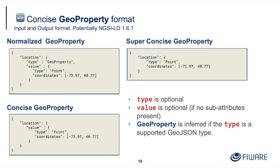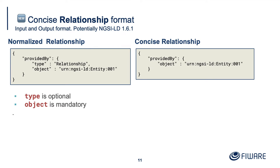If you've got more than just the simple value — additional properties or relationships with properties — you can leave a value in there and continue with additional sub-attributes. With relationships it's a little bit more tricky: you can't have a super-concise relationship, because a simple key-value pair already means a property. So the only supported concise version of a relationship is to just remove the type and put the object in there. Something which has just got object in it will be inferred as a relationship.